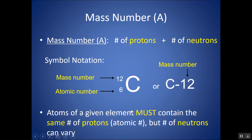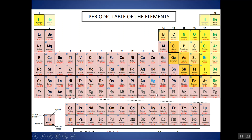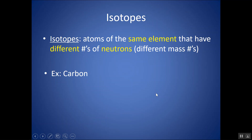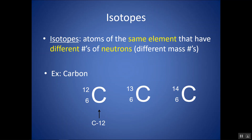Remember that atoms of a given element must contain the same number of protons. If this is carbon, the bottom number has to be six, or it's not carbon. But the number of neutrons can vary. Atoms with the same number of protons but different numbers of neutrons are called isotopes. Isotopes are atoms of the same element that have different numbers of neutrons, and therefore different mass numbers. For example, carbon — there's carbon-12, carbon-13, and carbon-14.